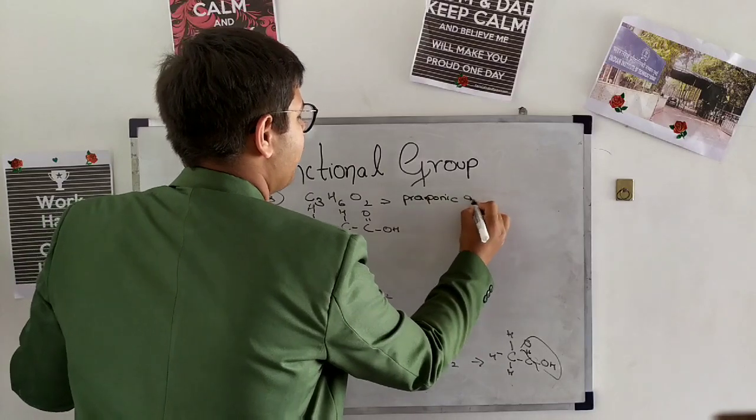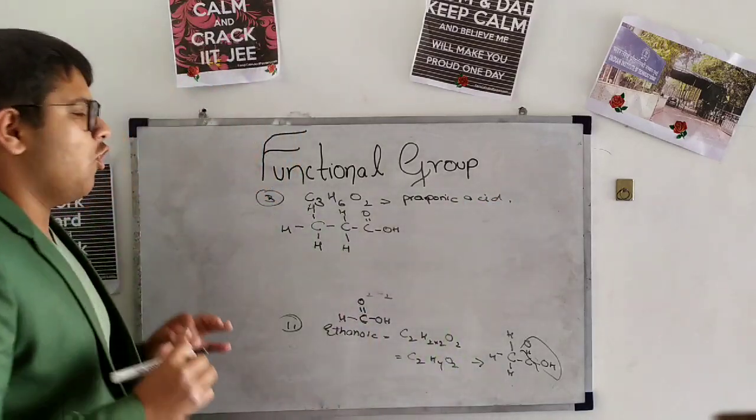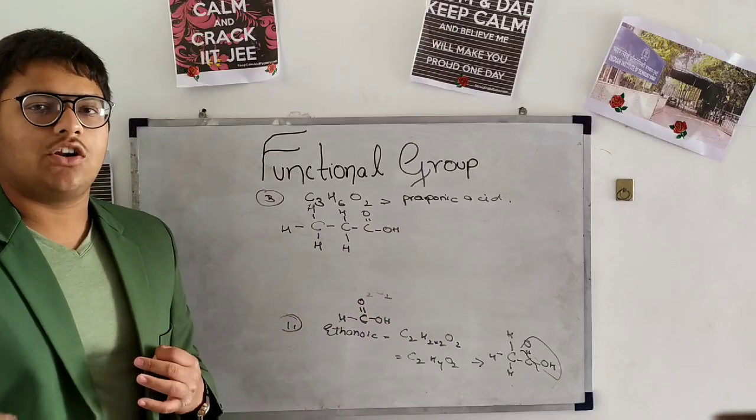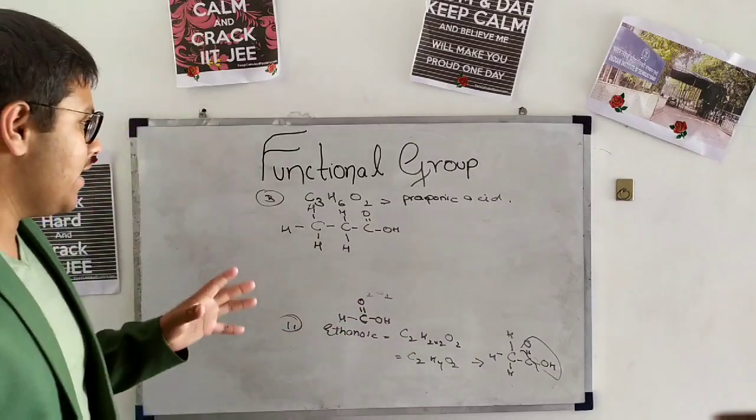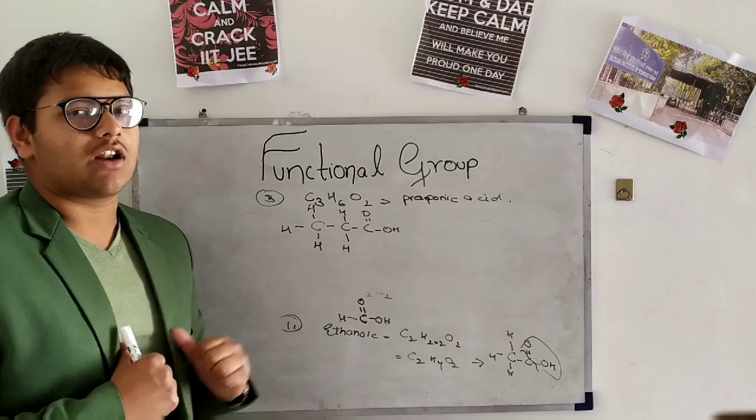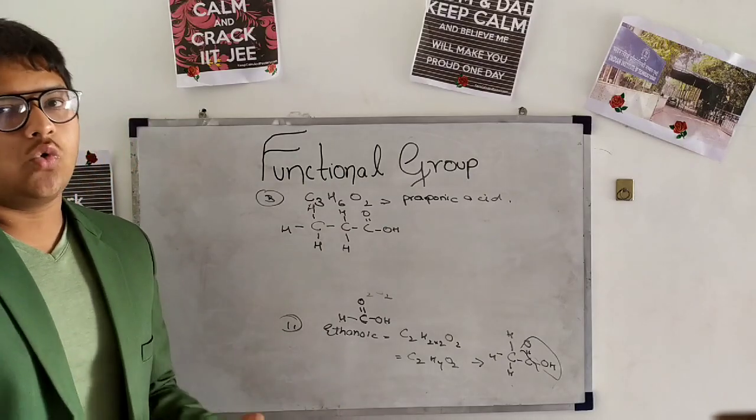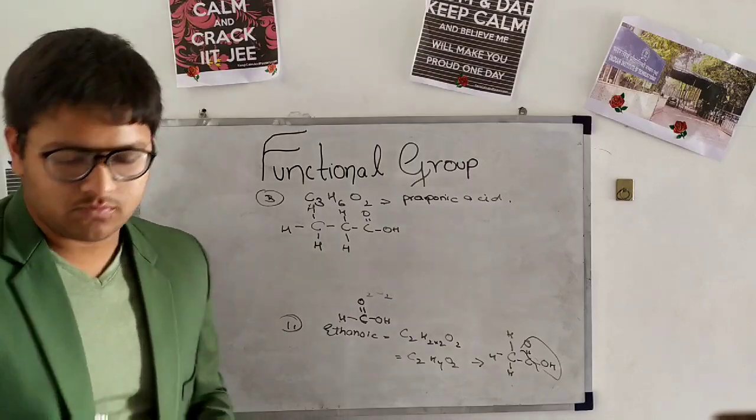Propanoic acid. Now I hope that you can make further butanoic, pentanoic, hexanoic, heptanoic acid. And if you like this video give us a thumbs up and subscribe my channel. And if you have any doubt regarding mathematics and science do comment below. I will solve for you. Thank you.